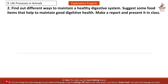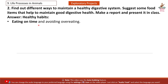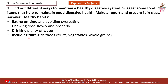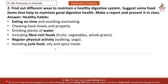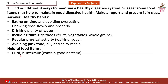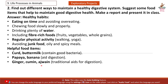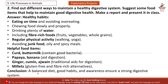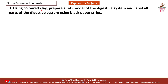Exploratory Project 2: Find out different ways to maintain a healthy digestive system and suggest food items that help. Answer — Healthy habits: eating on time and avoiding overeating, chewing food slowly, drinking plenty of water, including fiber-rich foods (fruits, vegetables, whole grains), regular physical activity (walking, yoga), avoiding junk, oily, and spicy meals. Helpful food items: curd and buttermilk (contain good bacteria), papaya and banana (aid digestion), ginger, cumin, ajwain, millets (gluten-free and fiber-rich). Conclusion: a balanced diet, good habits, and awareness ensure a strong digestive system.